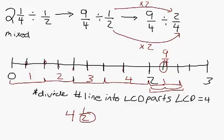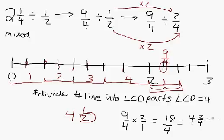We can always check this using regular division. We multiply by the reciprocal, so we get nine-fourths times two over one, which is eighteen over four, which is four and two-fourths, which equals four and a half. So you get the same answer both methods. That's how you divide fractions pictorially.